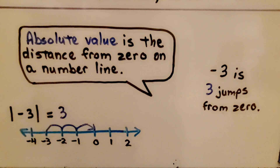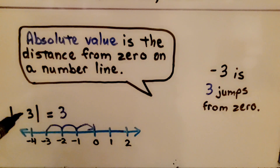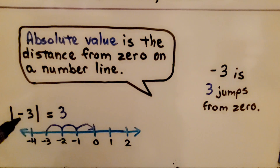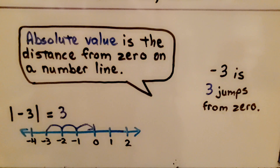Absolute value is the distance from zero on a number line, written with a bar on each side. The absolute value of negative three is three — negative three is three jumps from zero, so its absolute value is just three.